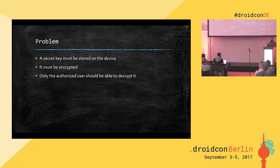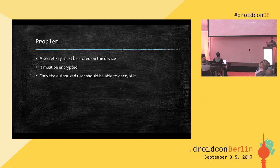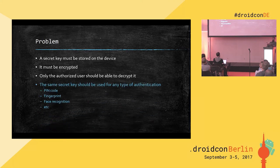The secret key must be encrypted on the device. If it is stored as plain text, an attacker can access it, reproduce the OTP, authenticate to the system, and hijack sessions or bank accounts. The secret key must only be decryptable by the authorized user — the owner of the account activated on the phone.